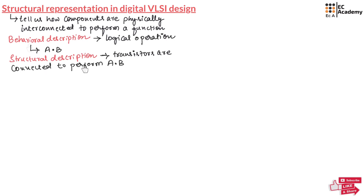In the behavioral description, we focus on the logical operation. For example, if we have an operation A AND B, the behavioral description focuses on the logical operation that is performed. But the structural description focuses on the physical interconnection of transistors — for example, how the transistors are interconnected to perform A AND B.